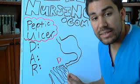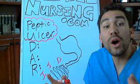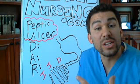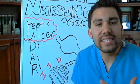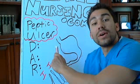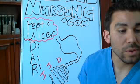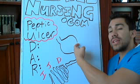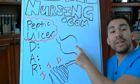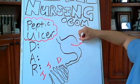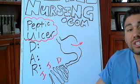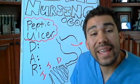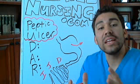Once your mucosal membranes become eroded to the point where the epithelial cells are exposed, the gastric juices start to eat at those epithelial cells — basically the skin cells inside your stomach. If it eats all the way through and you get a peptic ulcer, you can get a perforated bowel, meaning there's now an opening where toxic waste or nutrients are leaking into the peritoneal cavity.